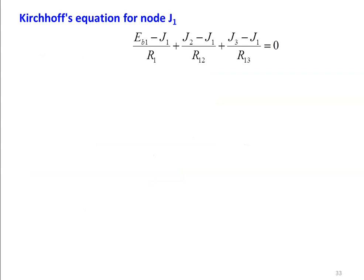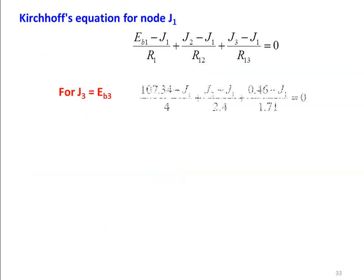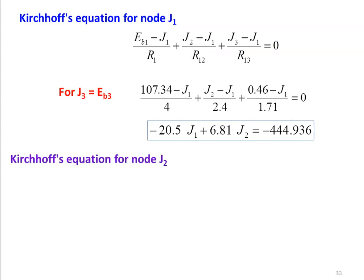All emissive powers are calculated. Now writing the nodal equation for J1: (Eb1 minus J1) divided by R1 plus (J2 minus J1) divided by R12 plus (J3 minus J1) divided by R13 equals 0. Substituting: (107.34 minus J1) divided by 4 plus (J2 minus J1) divided by 2.4 plus (0.46 minus J1) divided by 1.71 equals 0. Solving, this gives: minus 20.5 J1 plus 6.81 J2 equals minus 444.936.